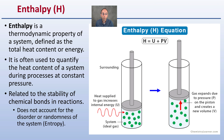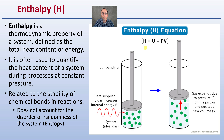Enthalpy does not account for the disorder or randomness of a system — keep in mind that disorder and randomness is entropy. In the enthalpy equation, we look at the total thermodynamic property of the system: V represents volume, P represents pressure, and U represents the heat supplied as internal energy. Putting all of these together is how we calculate enthalpy.